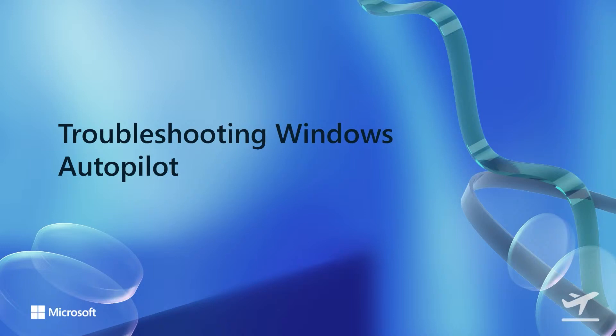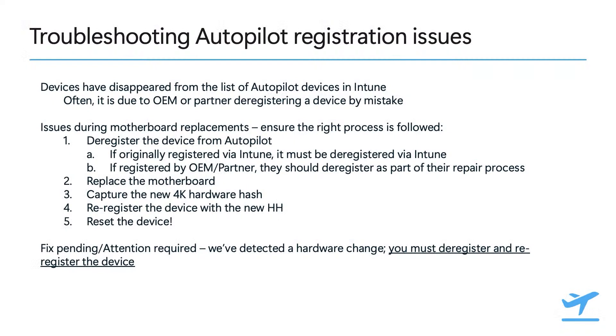Now let's start with Windows Autopilot. We wanted to bring attention to a few known issues that are well-documented but we still hear customers escalating to us. Let's get started with Autopilot registration issues. We heard some customers report that some of their Autopilot devices have been deleted from the list of Autopilot devices in Intune — and we often hear that it was the OEM or the partner that unexpectedly deleted these objects.